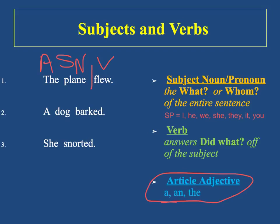Alright, let's try the second sentence: A dog barked. What barked? Dog. So the answer to the what question is our subject noun. Then to find the verb, we say a dog did what? Barked. So barked is our verb. A is an article adjective, so we label it A. Find your subject and your verb, and draw a line between them.